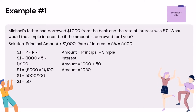We can also prepare a table for the above question, adding the amount to be returned after the given time period using the amount formula: Amount = Principal + Simple Interest. So, 1,000 + 50 = $1,050.